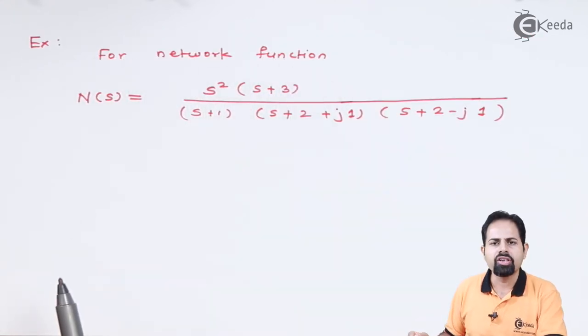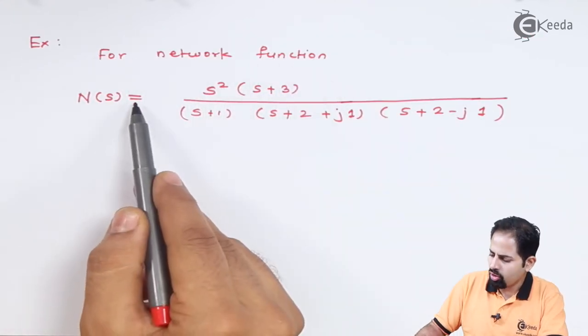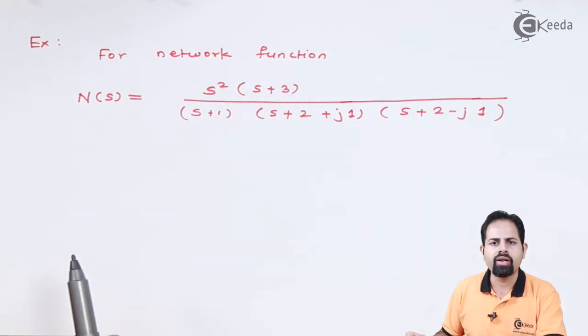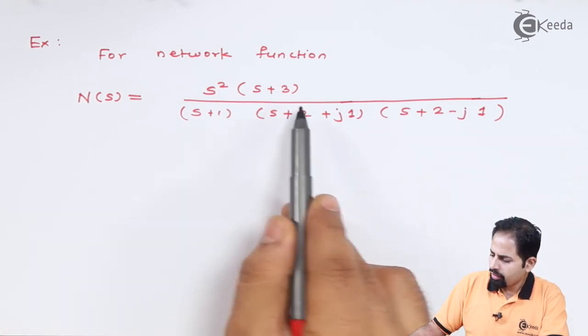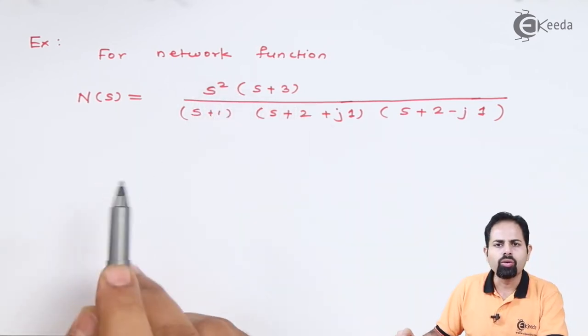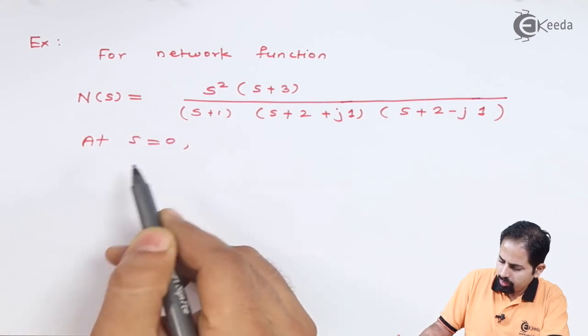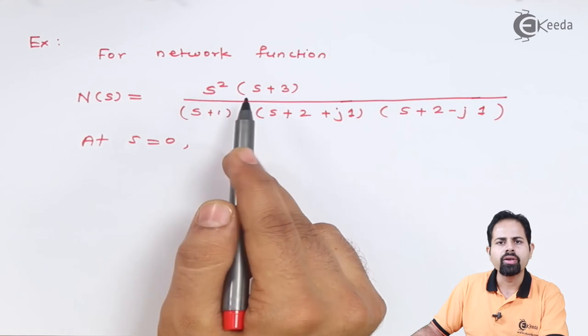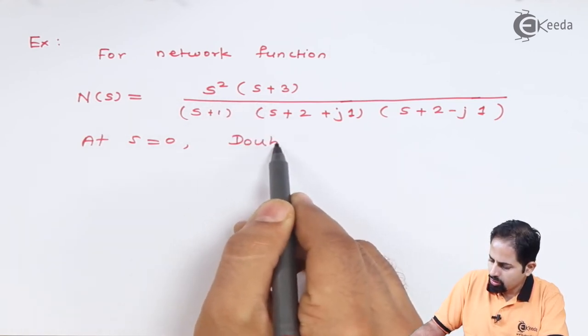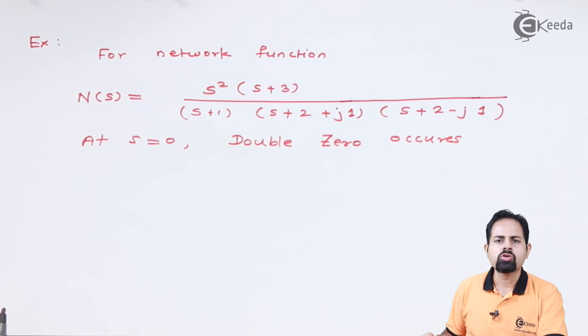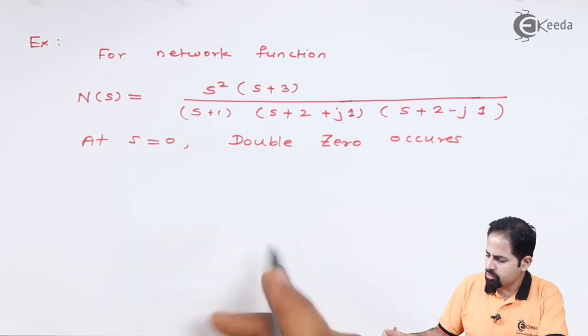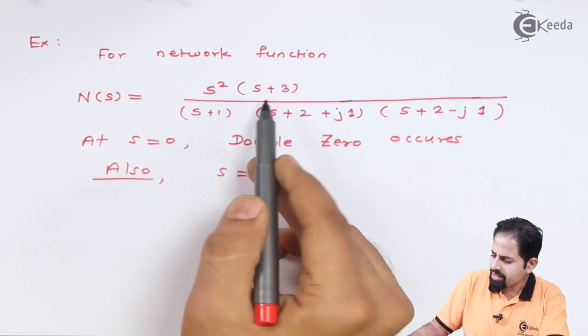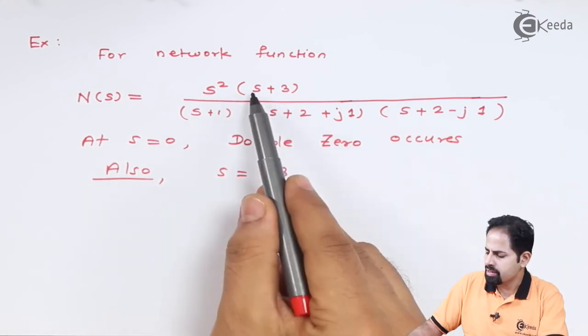So I have a network function here which is given as N(s) equal to s² into (s + 3) upon (s + 1) and whatever it is given. Now you can see here whenever this s becomes 0, my network function will drop to 0. So here I have s² means I have double zero.